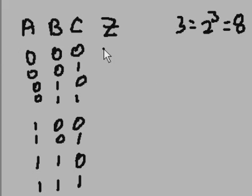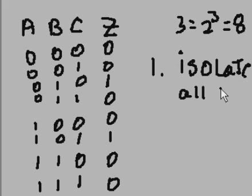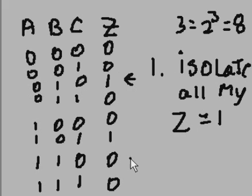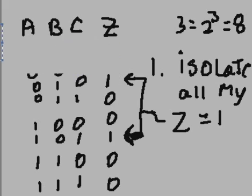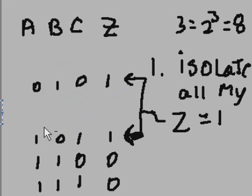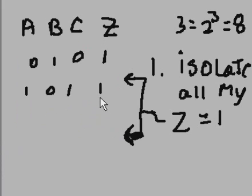Now let's say I've got outputs: 0, 0, 0, 1, 0, 1, 0, 0. So for input combinations 0,1,1 and 1,0,1, I've got output Z equal to 1. Step number one: I have to isolate all my Z's that equal 1 — that's here and here. I'll make a Boolean expression based on these two rows.